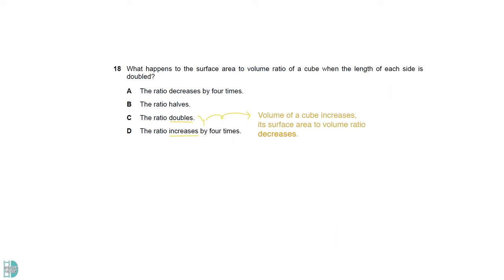As the volume of a cube increases, its surface area to volume ratio decreases. So C and D are wrong. If the side is doubled, the ratio halves. If you are not sure about this, just draw a few cubes and do the calculation and you will find the answer easily.